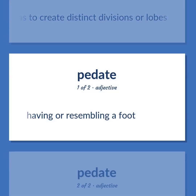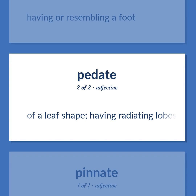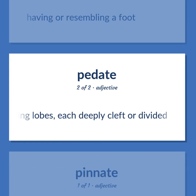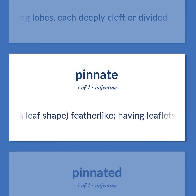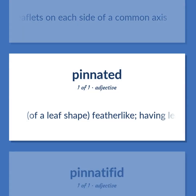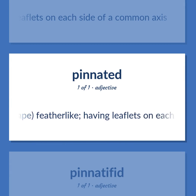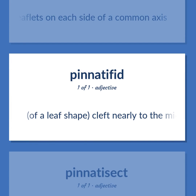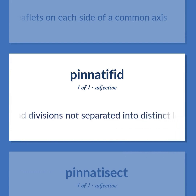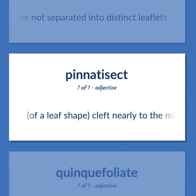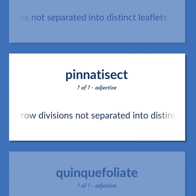Pedal: Having or resembling a foot. Of a leaf shape: having radiating lobes, each deeply cleft or divided. Feather-like, having leaflets on each side of a common axis. Pinnatifid: Cleft nearly to the midrib in broad divisions not separated into distinct leaflets. Pinnatipartite: Cleft nearly to the midrib in narrow divisions not separated into distinct leaflets.